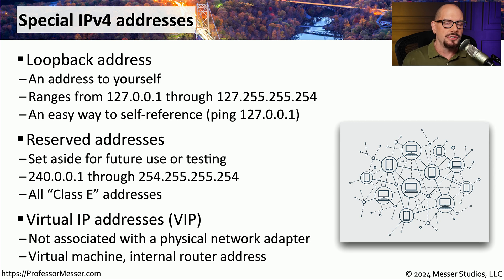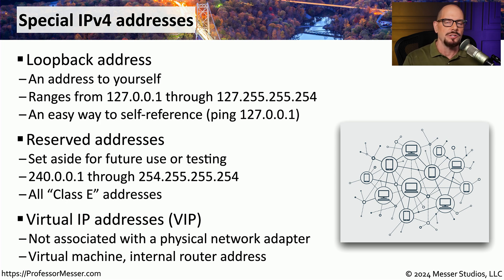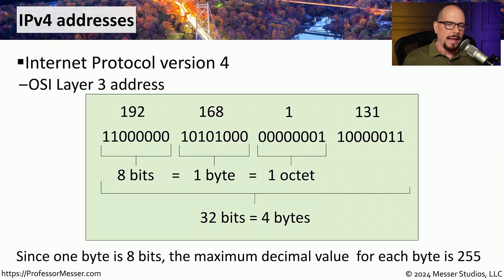Another address type you might run into is one that is not real — it's a virtual IP address, or VIP. Virtual IP addresses are not associated with a physical ethernet adapter. Instead, VIPs are addresses assigned to the internals of a device so you can always reference that device using that virtual IP address — for example, assigned to a virtual machine or associated with a particular router. The IP protocol and IP version 4 operate at OSI layer 3, so anytime you're working with an IP address, you're working at the network layer of the OSI model.